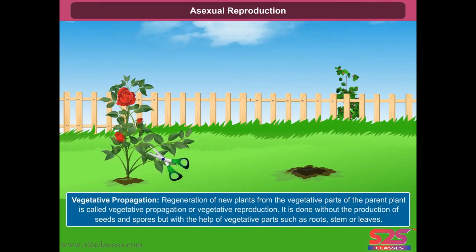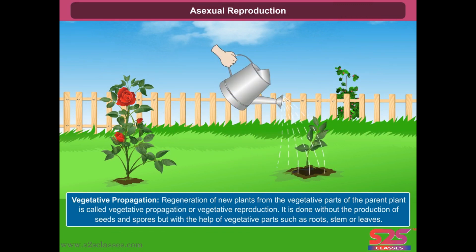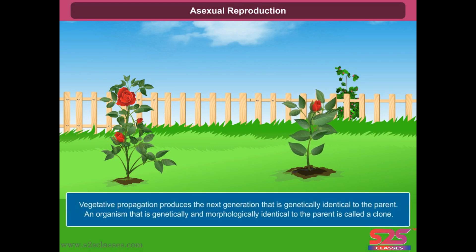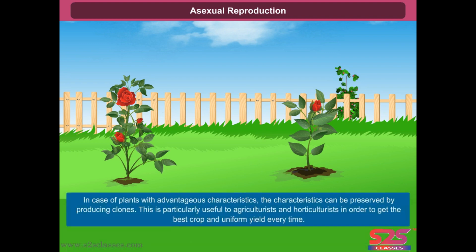Vegetative propagation: Regeneration of new plants from the vegetative parts of the parent plant is called vegetative propagation or vegetative reproduction. It is done without the production of seeds and spores, but with the help of vegetative parts such as roots, stem or leaves. Vegetative propagation produces the next generation that is genetically identical to the parent. An organism that is genetically and morphologically identical to the parent is called a clone. In case of plants with advantageous characteristics, these characteristics can be preserved by producing clones, which is particularly useful to agriculturalists and horticulturalists to get the best crop and uniform yield every time.